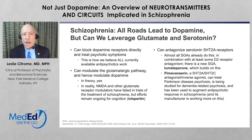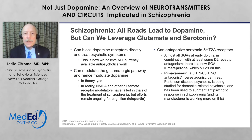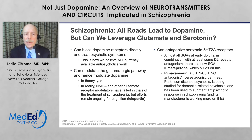So glutamate is certainly an approach we can think about in terms of drug development that does not involve postsynaptic dopamine D2 blockade. Up to now, that's all we've been able to do. With the glutamatergic pathway, we have an opening of addressing hypofunctional NMDA receptors. Currently, there are phase 3 studies of ictopertin, a glycine transporter type 1 inhibitor that is specifically being looked at for cognition.